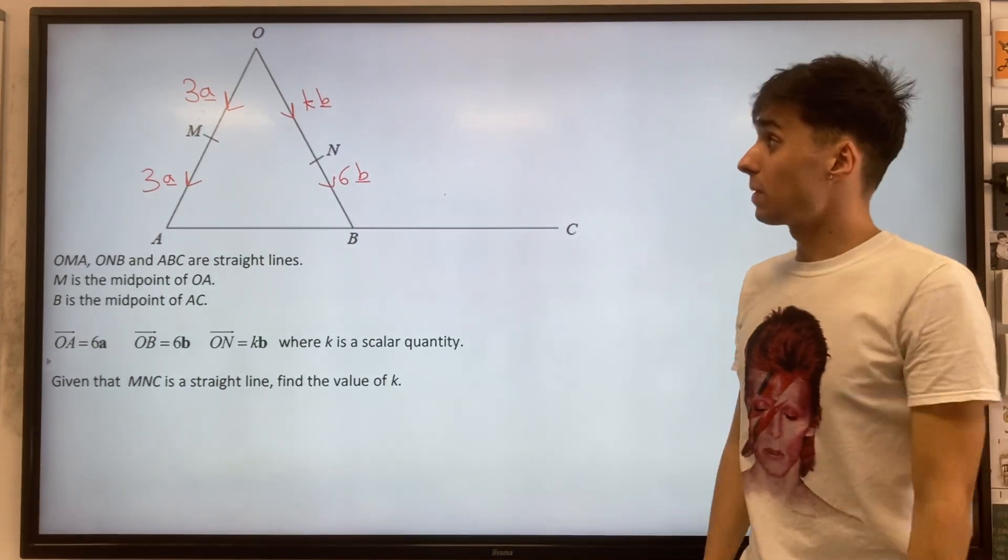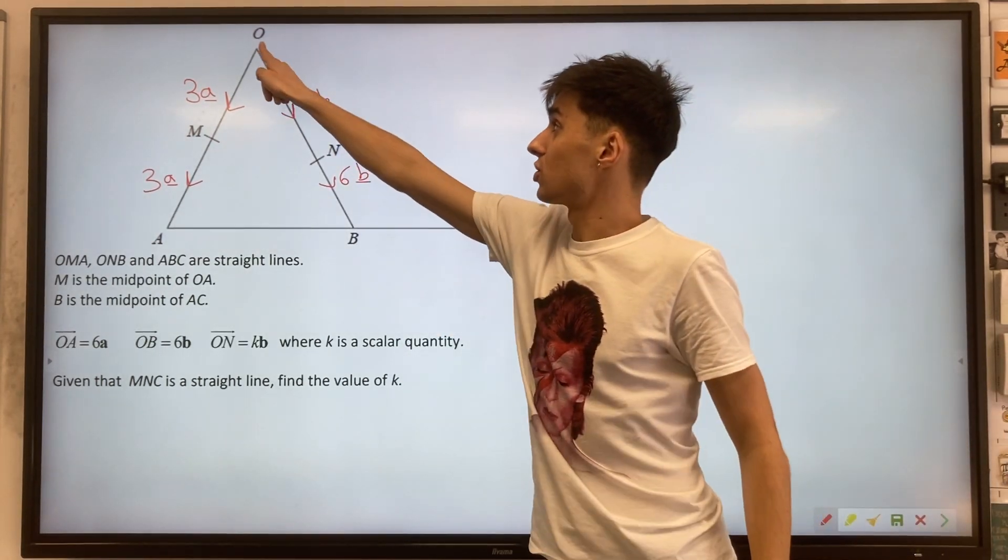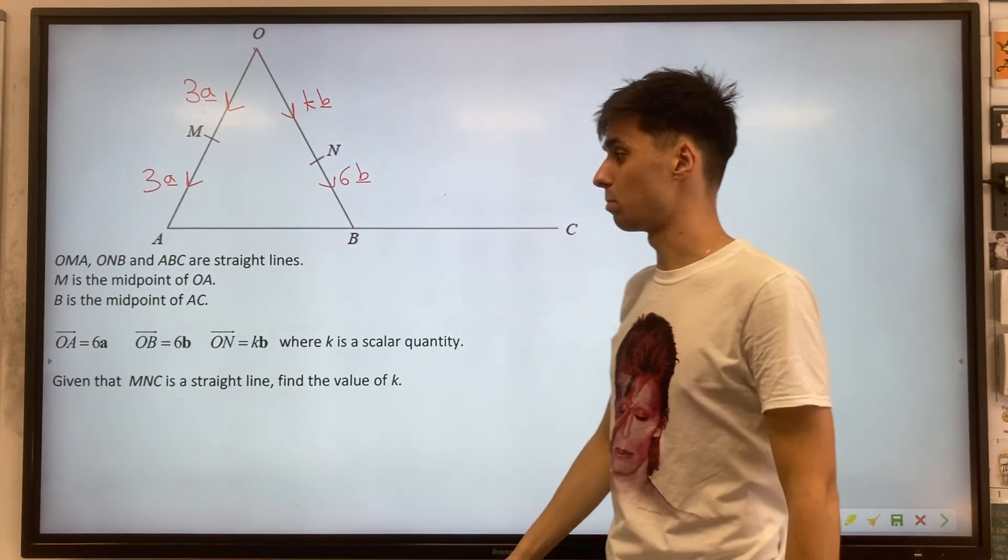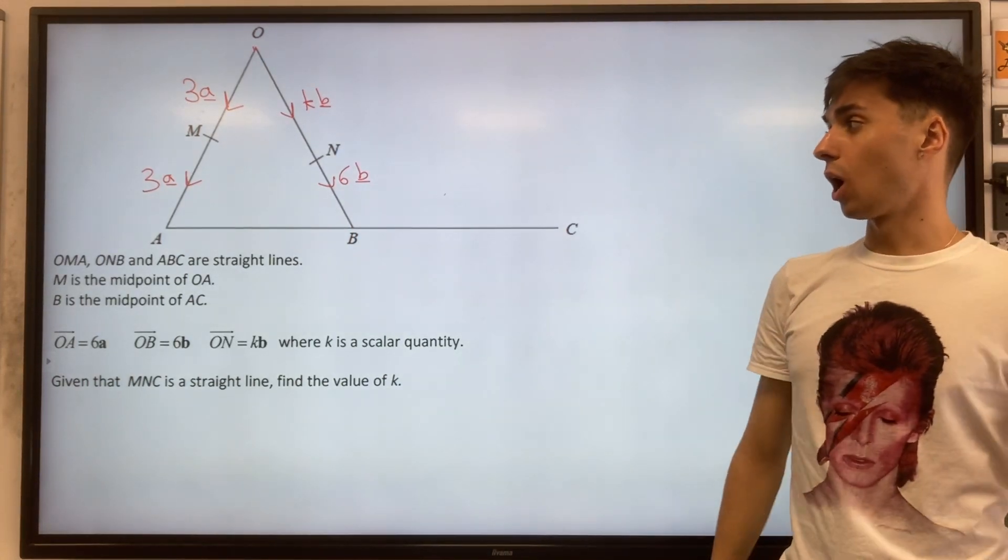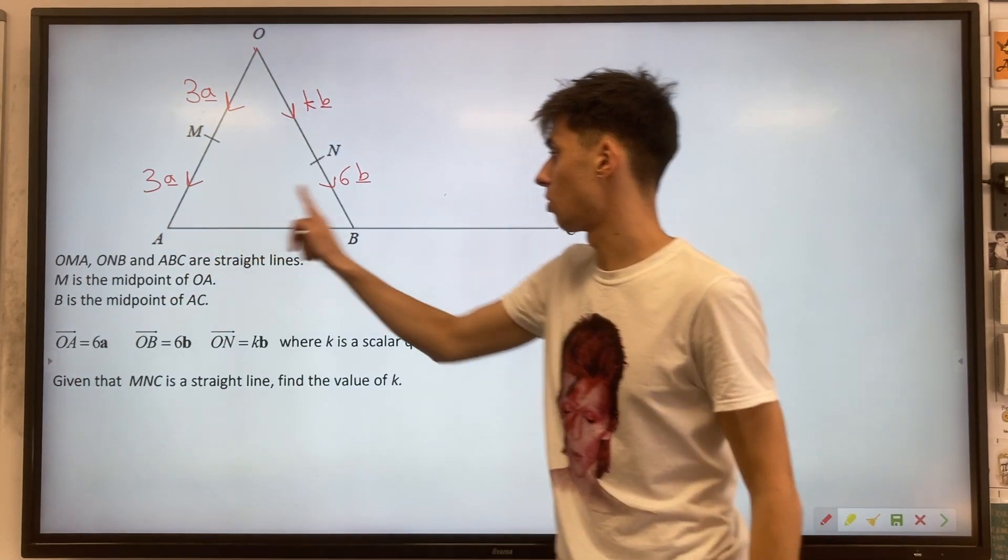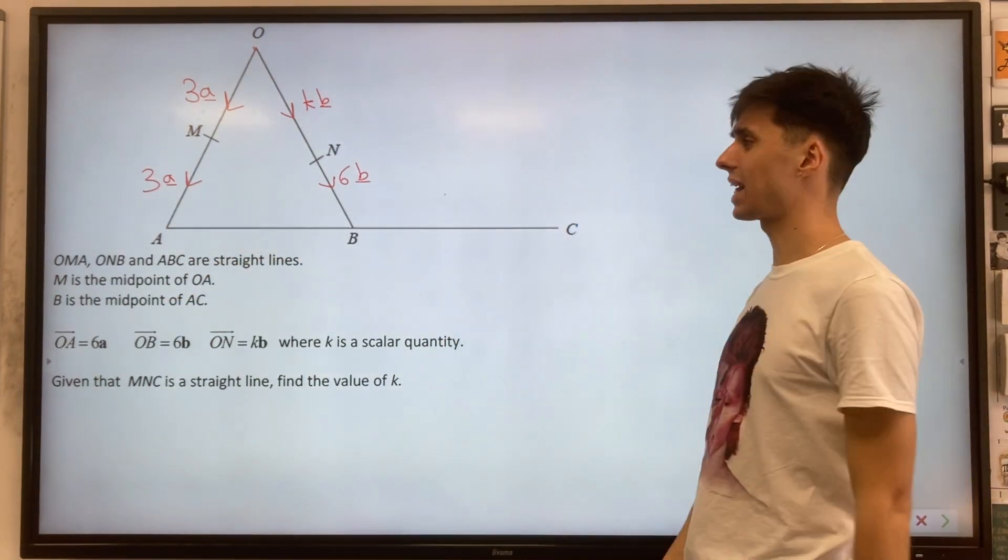But again, just being really clear, this kb is just for O to N. The 6b is for the entire OB vector. And we also get given that B is the midpoint of AC, so we're going to have to use that a little bit later.